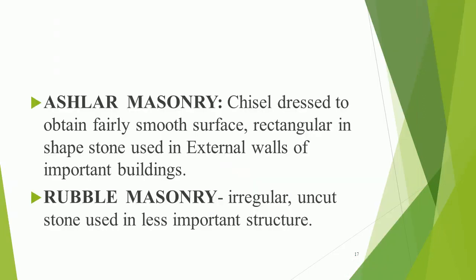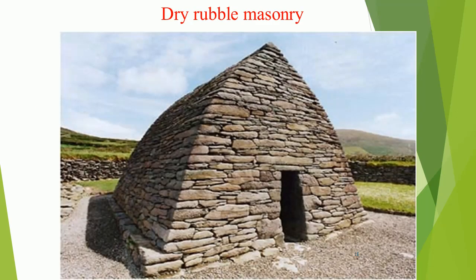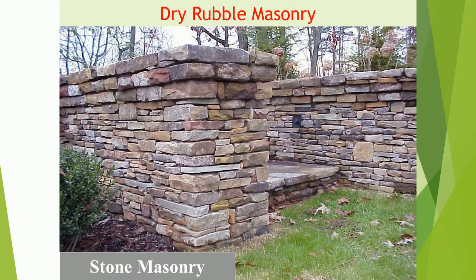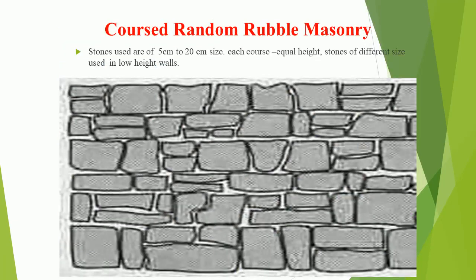Ashlar masonry — chisel dressed to obtain a fairly smooth surface, rectangular in shape; stone used in external walls of important buildings. Rubble masonry — irregular, uncut stone used in less important structures. Dry rubble masonry uses no mortar. Coursed random rubble masonry uses stones of 5 cm to 20 cm size; each course has equal height and stones of different sizes, used in low-height walls.